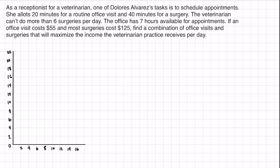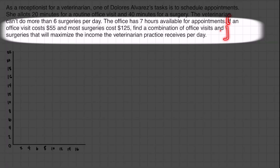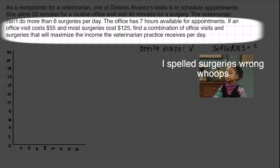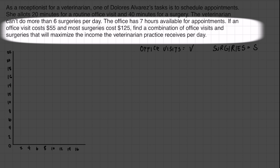Let's define all our variables and write the main function — that usually reveals itself in the last sentence of the paragraph. In this situation, a receptionist is booking appointments for a vet. The vet makes money through office visits, which we'll call v, and surgeries, which we'll call s. Those are the two variables we'll put on our graph: s and v.